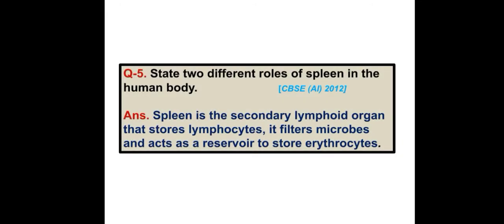State two different roles of spleen in the human body. The spleen is a secondary lymphoid organ that stores lymphocytes. It filters microbes and acts as a reservoir to store erythrocytes.